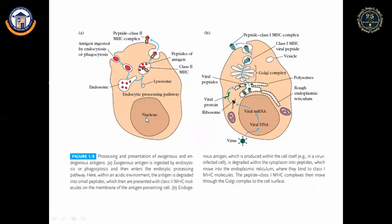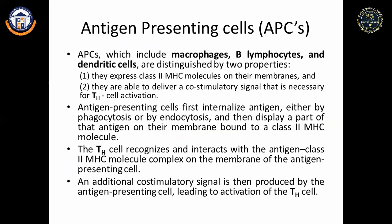Exogenous antigens are ingested by phagocytosis and presented via MHC class II molecules to helper T cells. Endogenous antigens — as in virus-infected cells — are produced internally, packaged into MHC class I molecules, and presented to cytotoxic T cells. Antigen-presenting cells (APCs) include macrophages, B lymphocytes, and dendritic cells; they express both MHC class I and class II molecules, though APCs predominantly express class II.